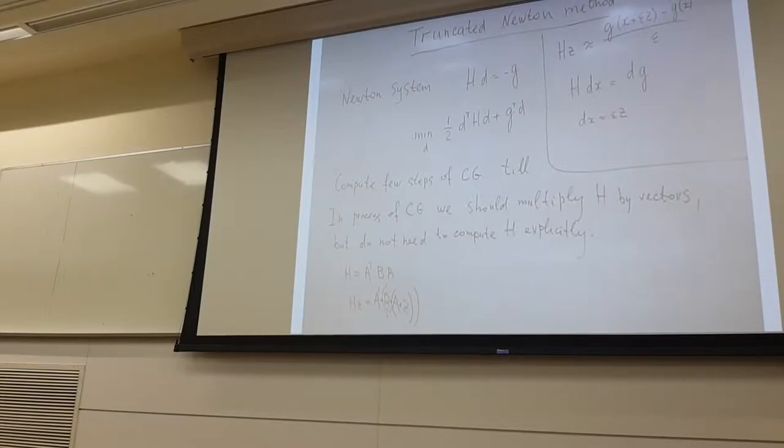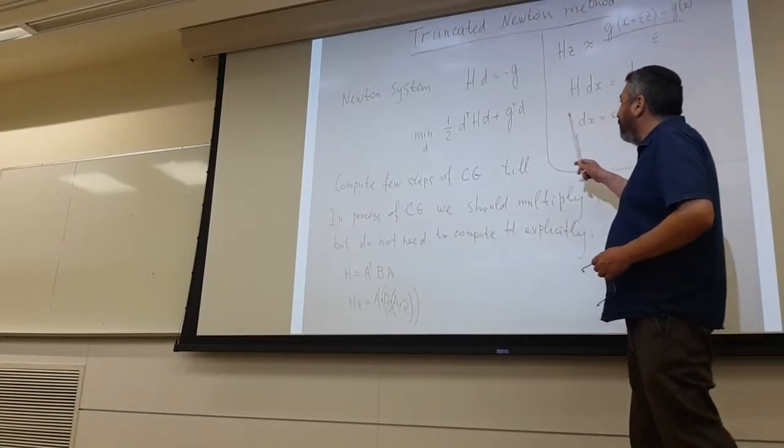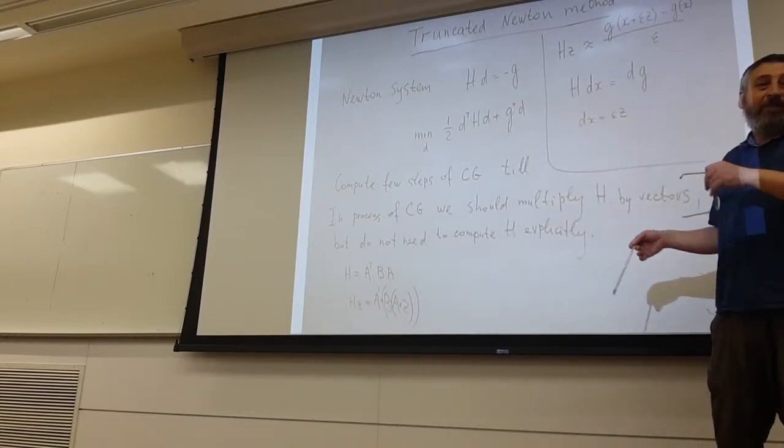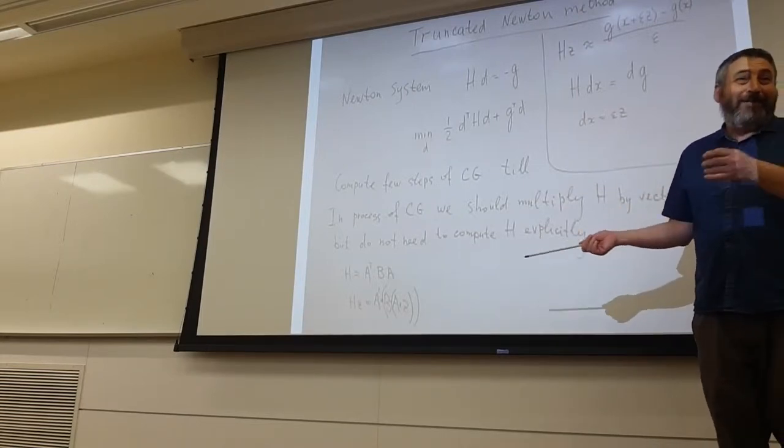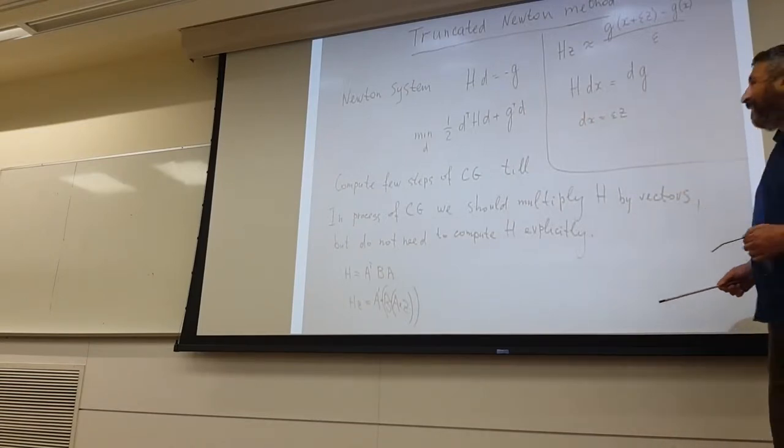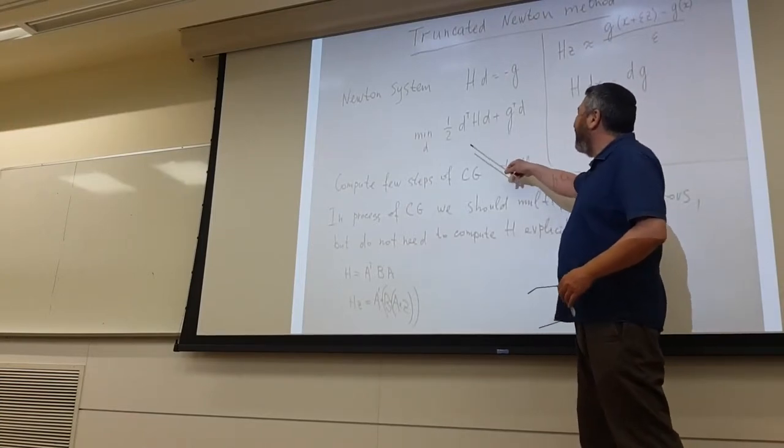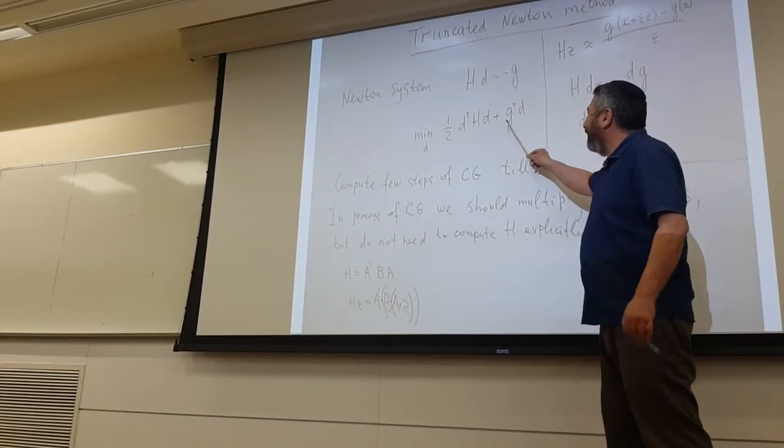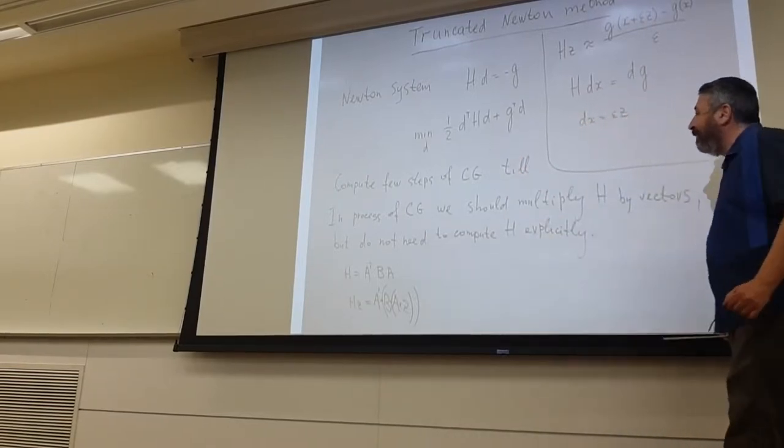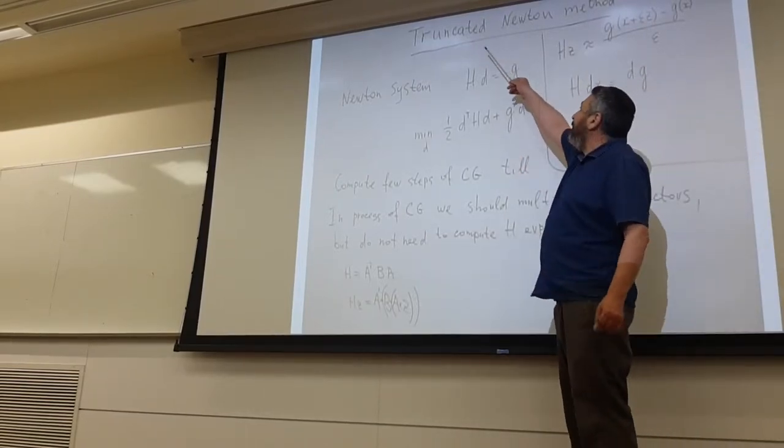So we learned the conjugate gradient last time and now one of applications to use it inside Newton method. We already learned that in Newton method at every iteration we minimize the quadratic model of our function, and we know that conjugate gradient is good in minimization of convex quadratic functions, so if the Hessian is positive definite.